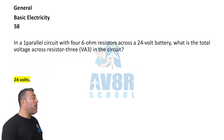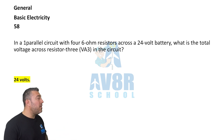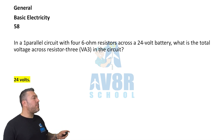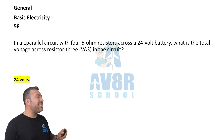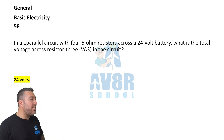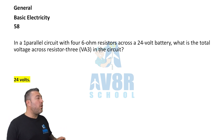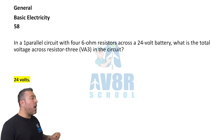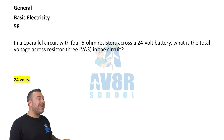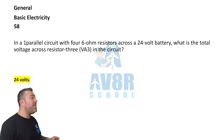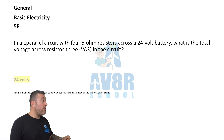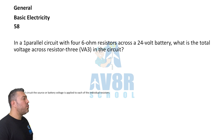Question 58. In a parallel circuit with four 6 ohm resistors across a 24 volt battery, what is the total voltage across resistor 3? The answer is 24 volts.